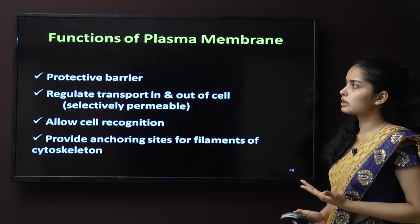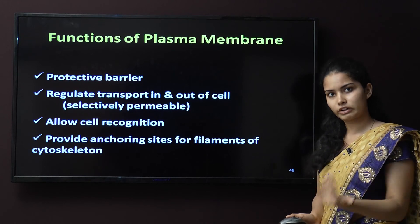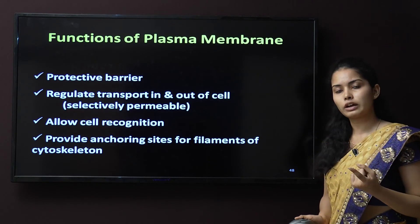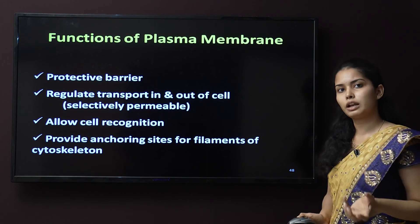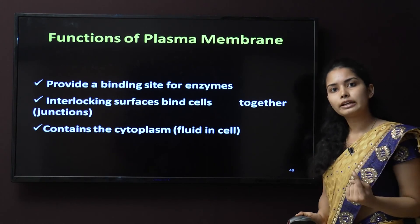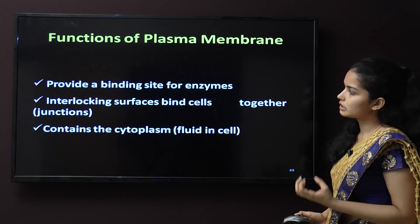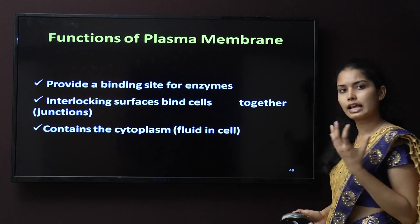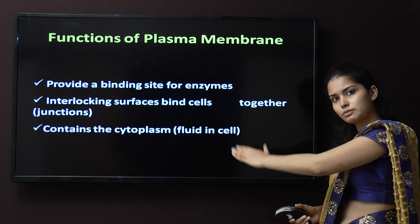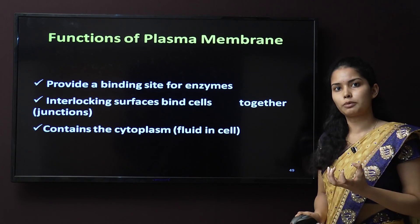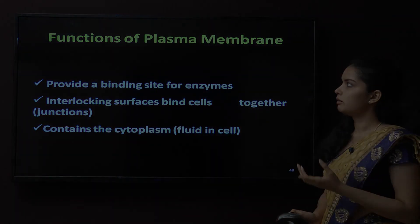The functions of the plasma membrane are: it provides a protective barrier; it regulates transport in and out of the cell; it allows cells to recognize each other; it provides anchoring sites for filaments of the cytoskeleton; it provides a binding site for enzymes, which are biological catalysts; it helps in interlocking the surface and binding cells together to form junctions; and it contains the cytoplasm — the fluid inside the cell — because of the plasma membrane.